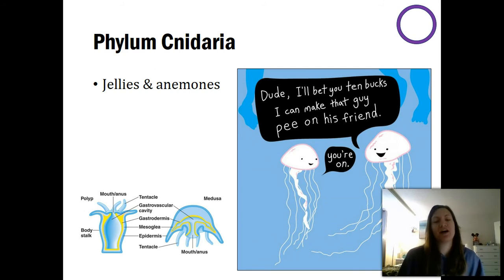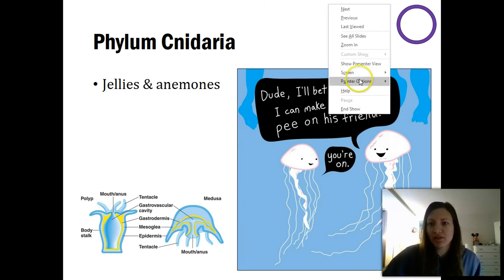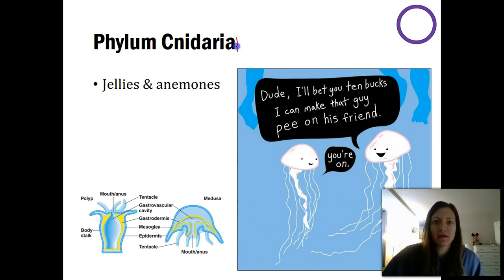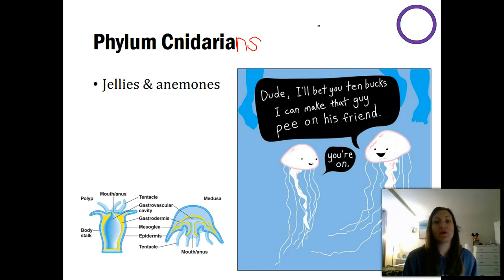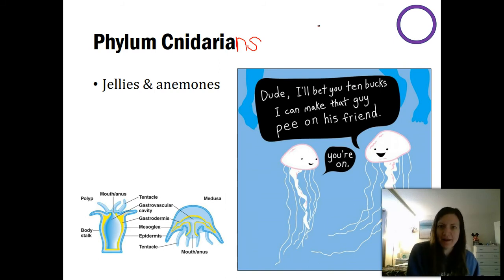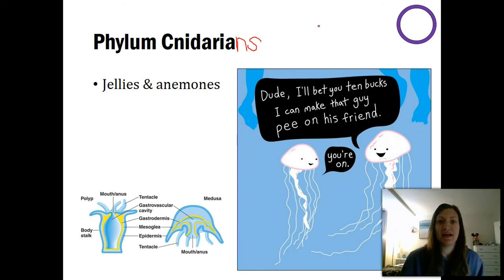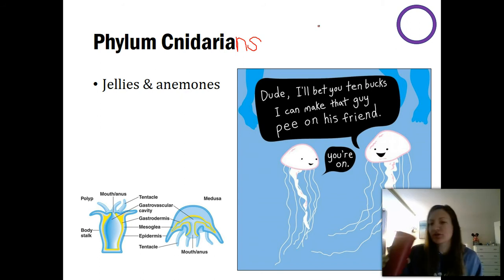The next one we're going to talk about, which has a little bit more order to it, is phylum Cnidaria. Sometimes you'll hear me refer to these organisms as cnidarians — this just refers to all organisms in phylum Cnidaria. Phylum Cnidaria includes both our jellyfish and things like sea anemones. Sea anemones are directly related — they're in the same phylum and share a lot of the same characteristics.